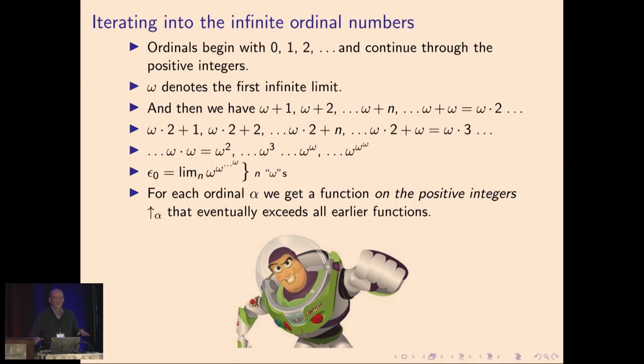And then we limit those at ω + ω, which we can write as ω × 2, and then add one to that, and add one again, and keep doing that. Eventually get ω + ω + ω, which is ω × 3, and then ω × 4. Then take the limit of those, and we get ω × ω, or ω², and ω³, and ω to the ω, and a stack of omegas.